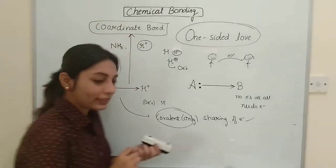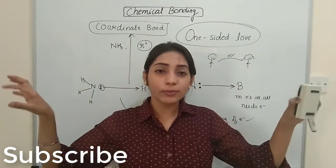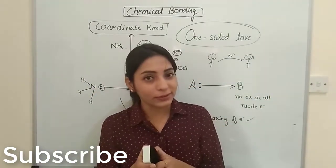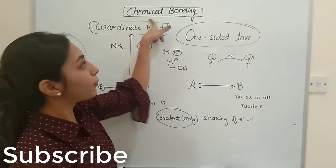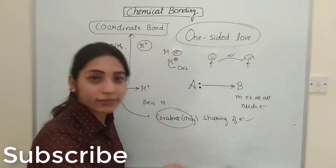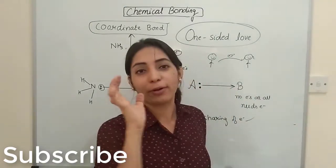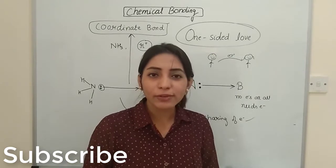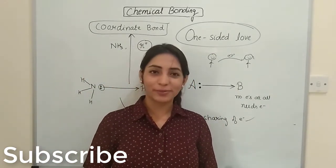So I told you three different types in which two atoms that were not happy without each other came close and formed molecules — ionic bonding, covalent bonding, and coordinate bonding. This was just the introduction of what we are going to study in the chapter chemical bonding. All upcoming videos will cover the details of each type. That's it for today — I will see you soon. Thank you very much, bye-bye.